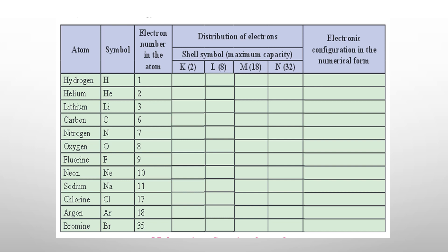Open your textbooks to that page. In this table, the first column shows atoms — these are the examples we are going to solve today. The second is the symbol, that is how you represent the atom. The third is the electron number in the atom, which is nothing but the atomic number. Knowing the atomic number — how many electrons are in the atom — is very important to find electronic configuration.